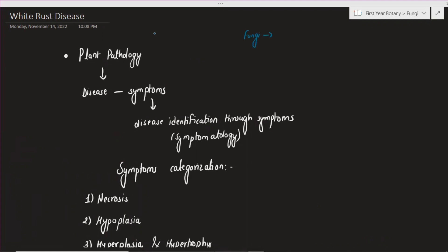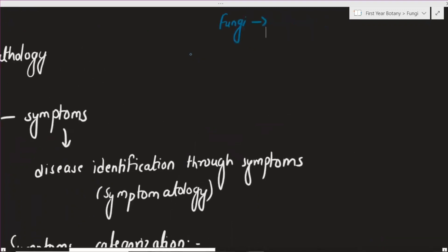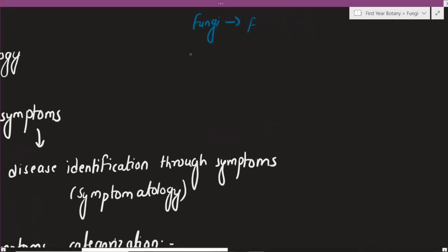If you have a question about fungi related to fungal disease, you will study about fungal disease. How many of you study? There are around 3 to 4 diseases. Then you will know the details. This is the white rust disease.